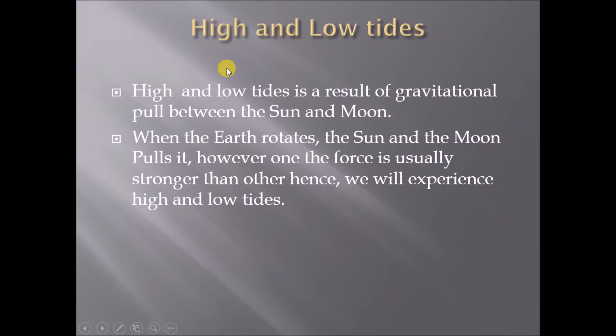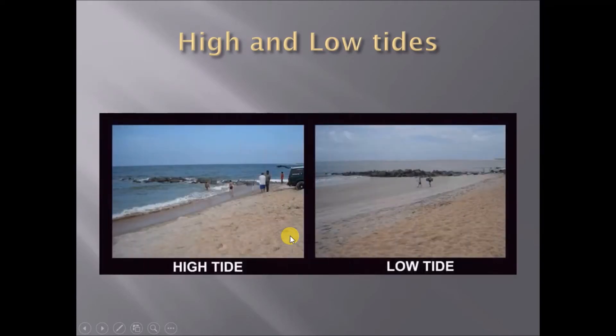The next effect of rotation is high and low tides. High and low tides are a result of gravitational pull between the Sun and the Moon. When the Earth rotates, the Sun and the Moon pull it. However, one force is usually stronger than the other, hence we will experience high and low tides.